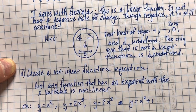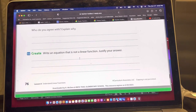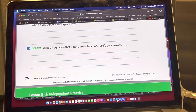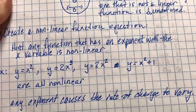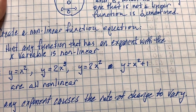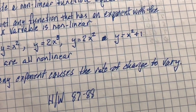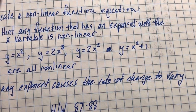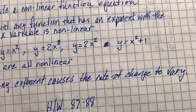The last question was to create a non-linear function equation. All you have to do to create a non-linear function is put an exponent on the independent variable. Any function with an exponent on x is not linear. Examples include y = x², y = 2x³, y = 2x², and y = x² + 1. The big hint: any exponent causes the rate of change to vary, and when the rate of change varies it's non-linear. The homework is pages 87 and 88.